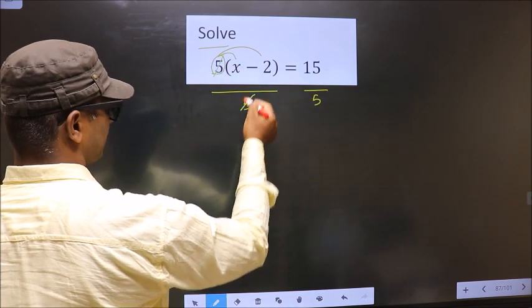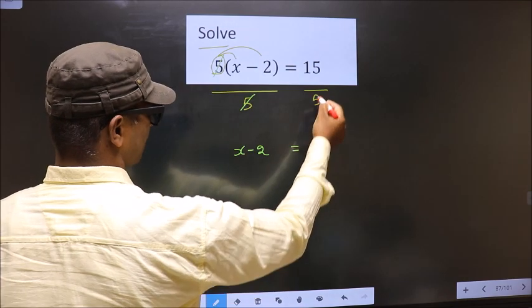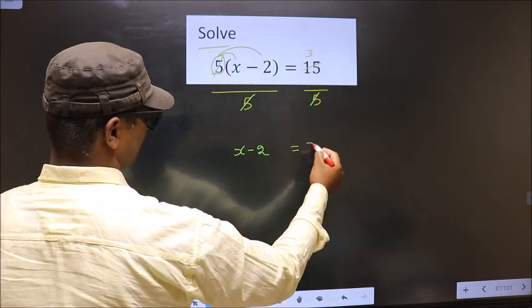So now this 5, this 5 cancel out, you are left with x minus 2. And on this side, 15 divided by 5 is 3.